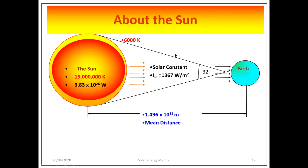The mean distance between the Sun and the Earth is 1.496 × 10¹¹ meters. The solar constant is 1367 W/m² and the included angle is 32 minutes.